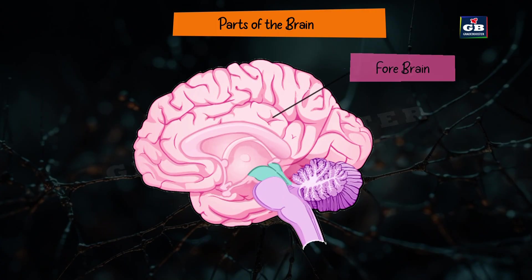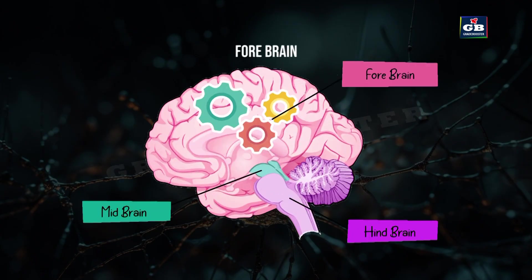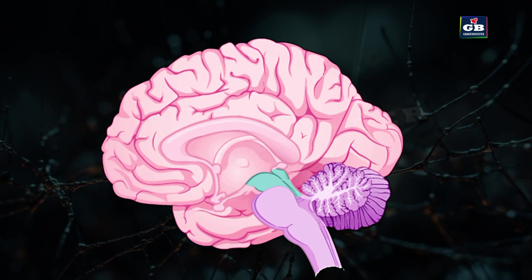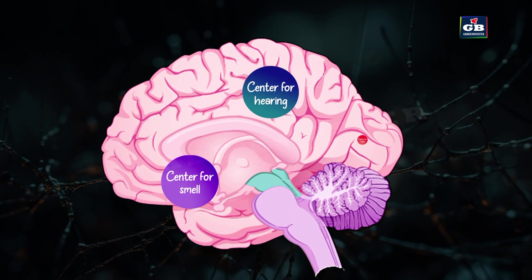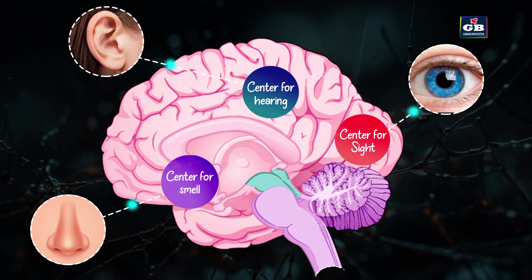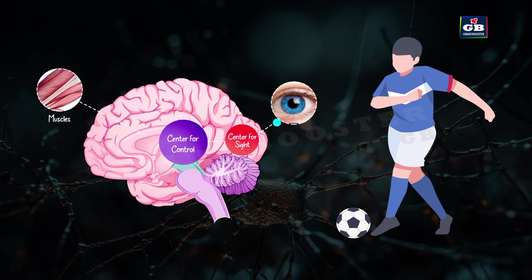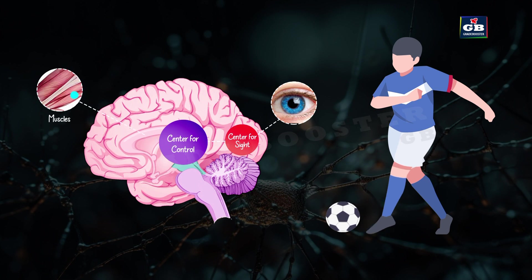Parts of the brain. First, the forebrain — it controls thinking, decision making and memory. It has centers for smell, taste, hearing and vision. It controls voluntary movements and hunger. For example, when playing football, your eyes send information to the brain, the brain decides and sends signals to the muscles of your leg to kick the ball.